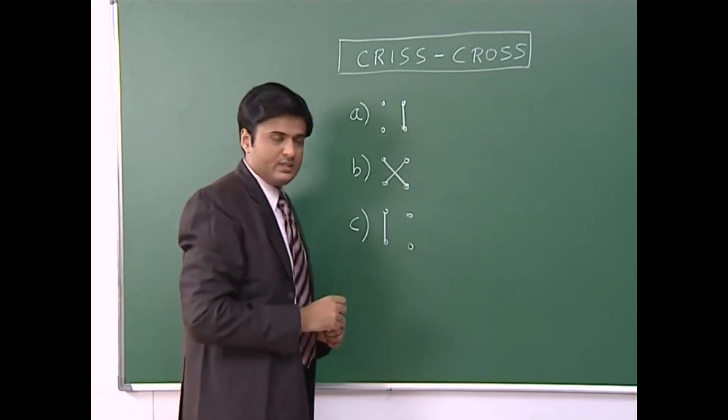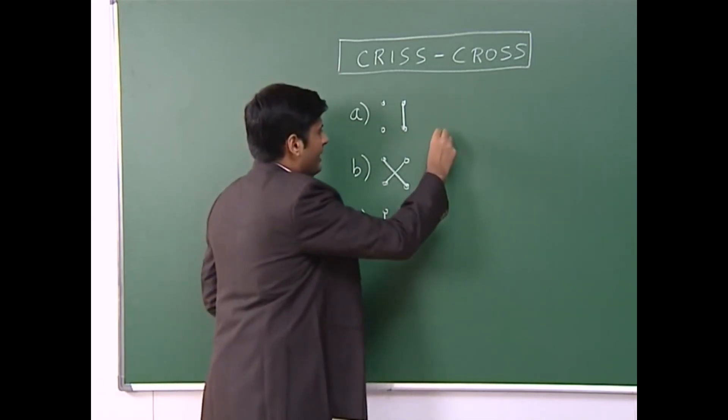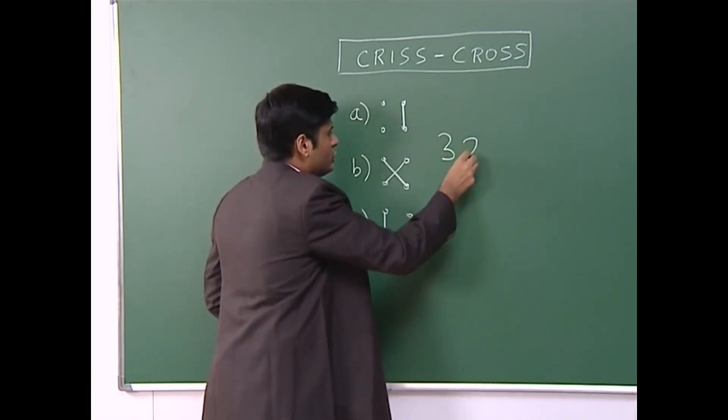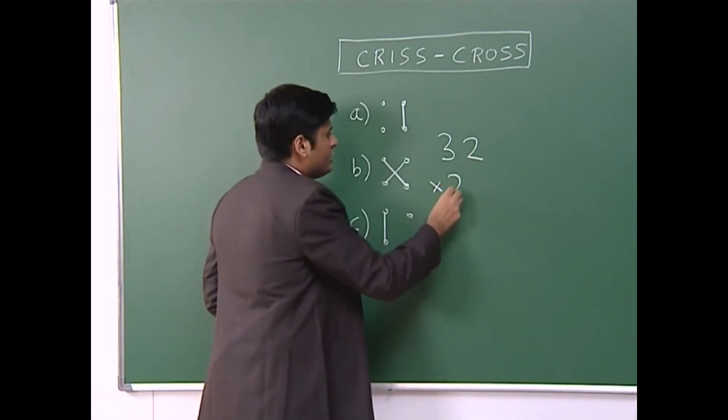Let us take one or two small examples. Suppose I have to multiply say 32 by 21.